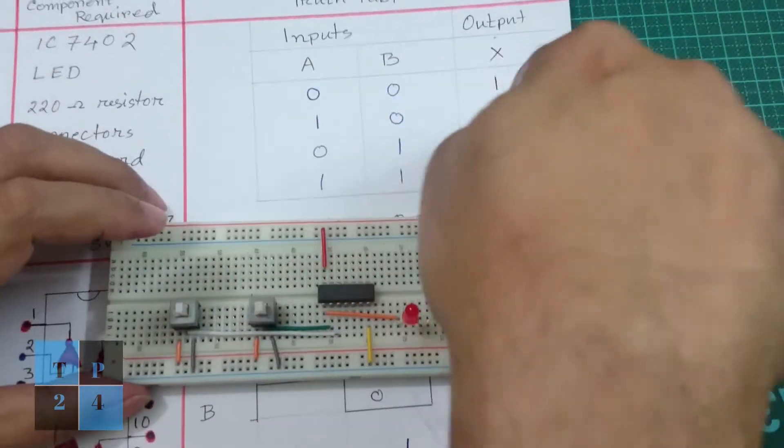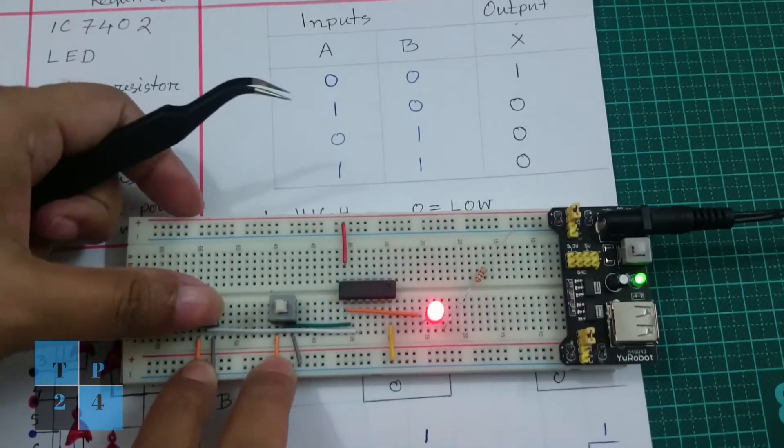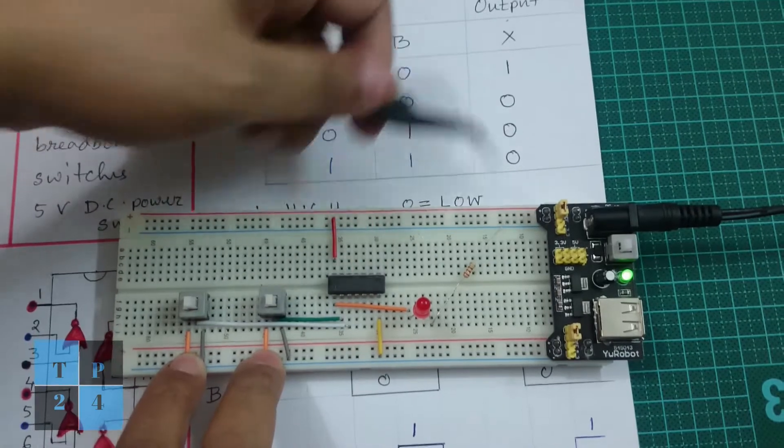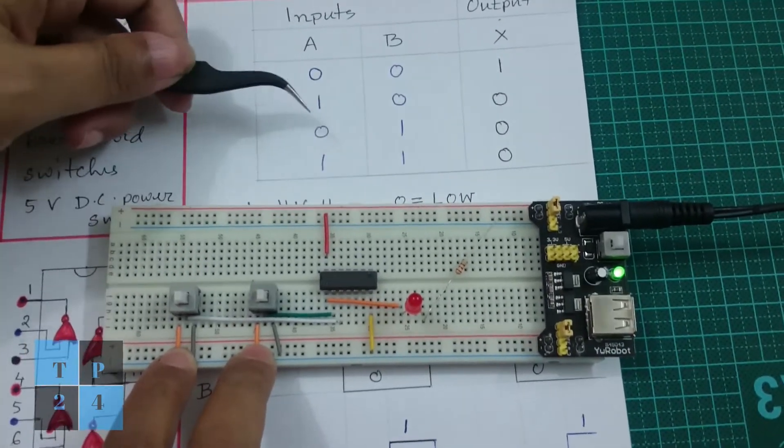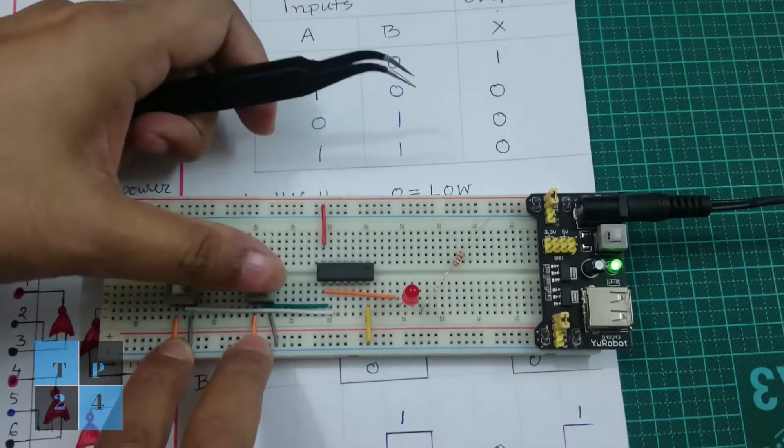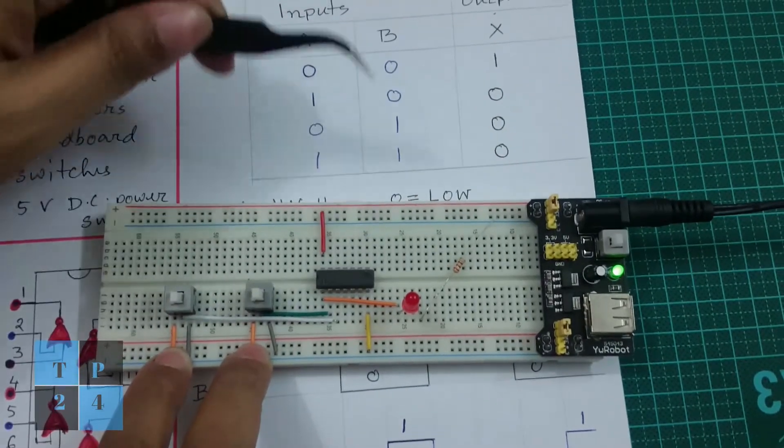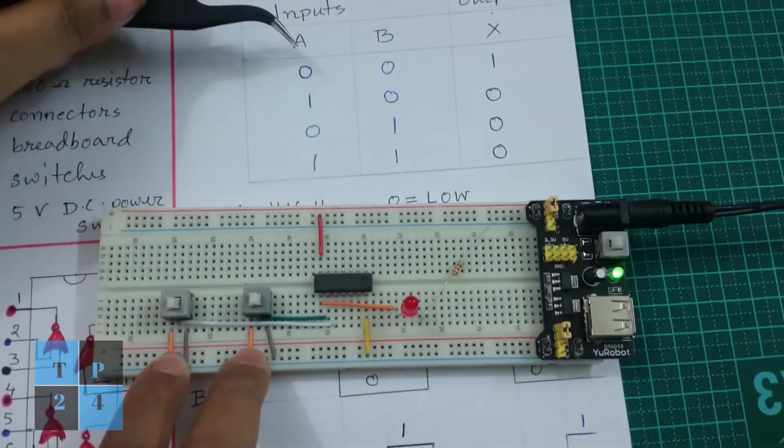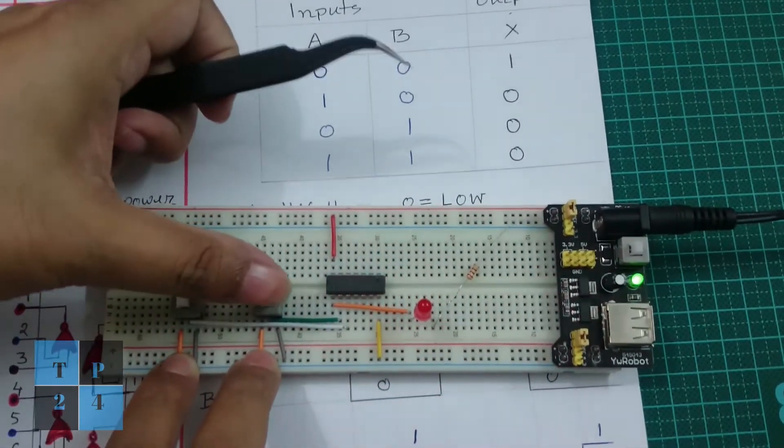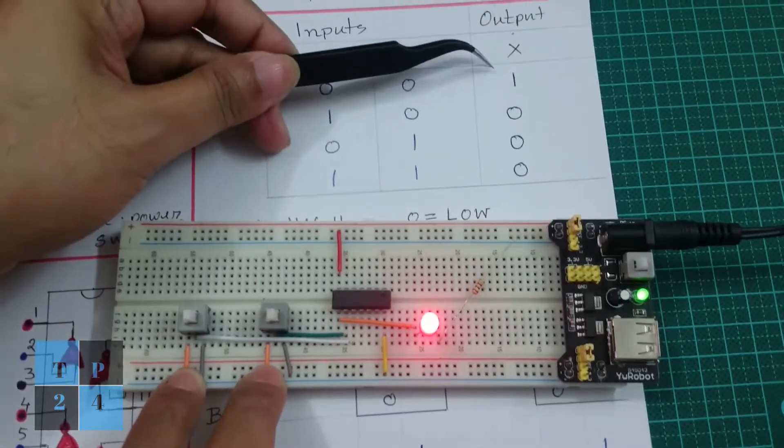If A is 0 and B is 1, the output is again 0, meaning the LED is off. If both are 1, the output is 0. So the only case when the LED is high is when A and B are both low, meaning both are in the off condition. Then the LED is high, meaning 1.